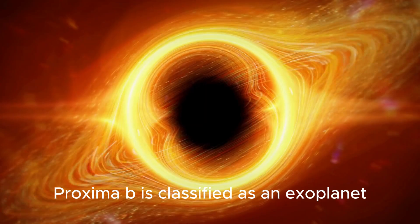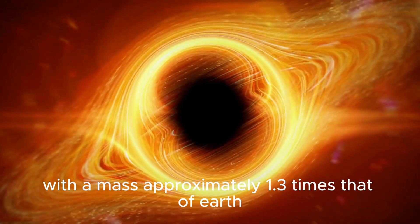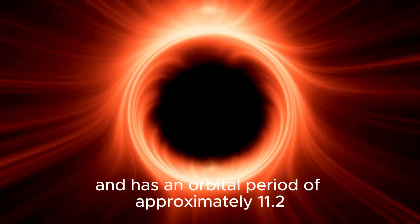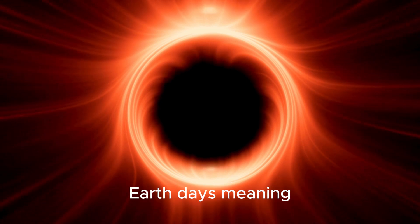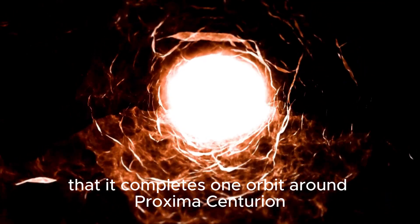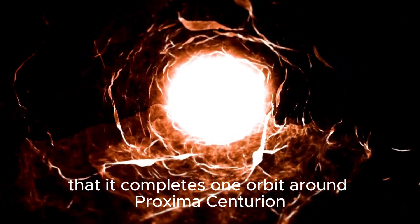Proxima b is classified as an exoplanet with a mass approximately 1.3 times that of Earth and has an orbital period of approximately 11.2 Earth days, meaning that it completes one orbit around Proxima Centauri in that time.